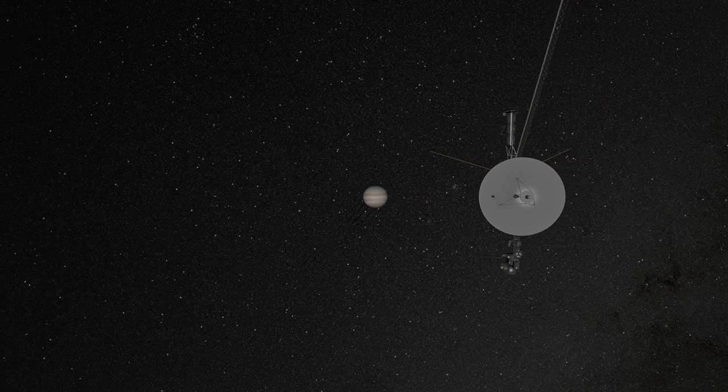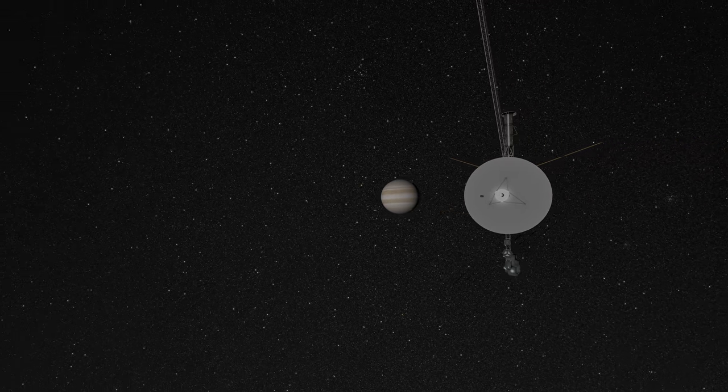In July 1979, Voyager 2 made its closest approach to Jupiter.